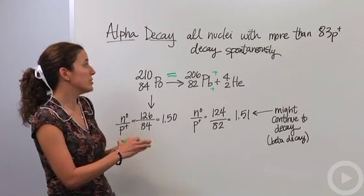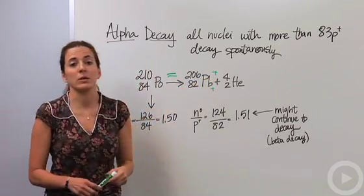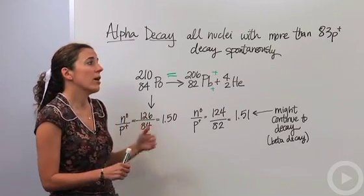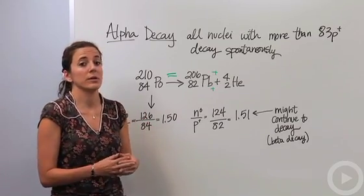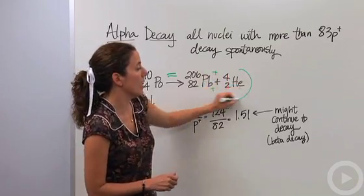When you're dealing with nuclear reactions, make sure that your mass numbers equal up and your atomic numbers equal up also. But anything with proton over 83 is going to decay automatically, and that's called alpha decay - releasing an alpha particle.